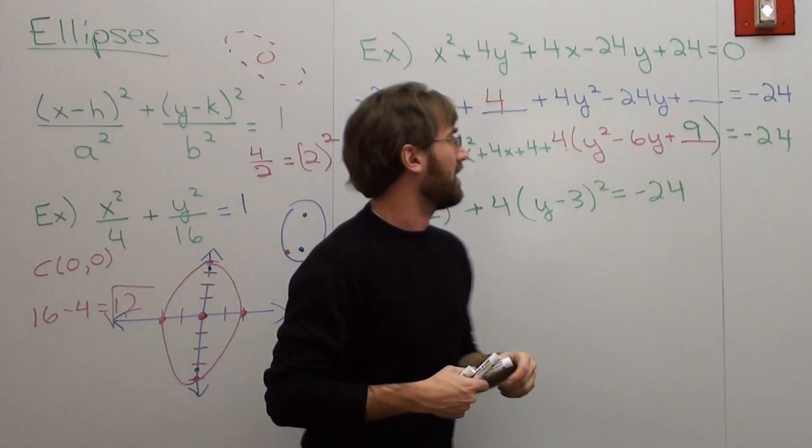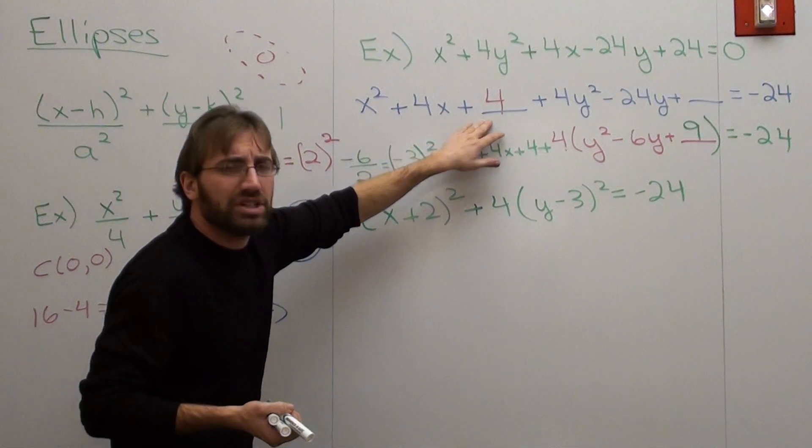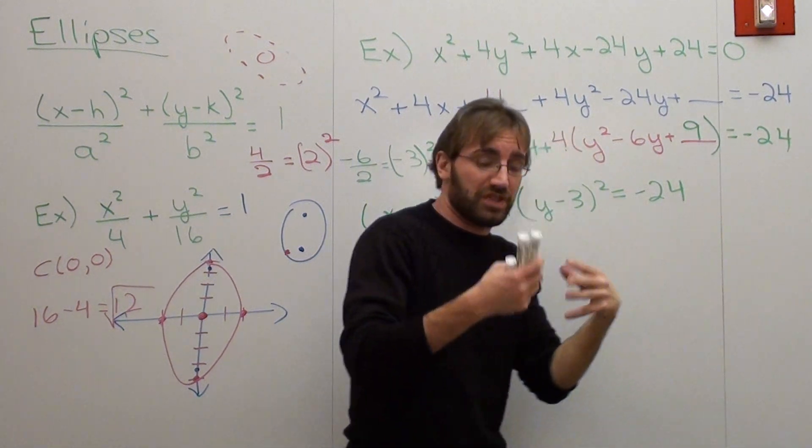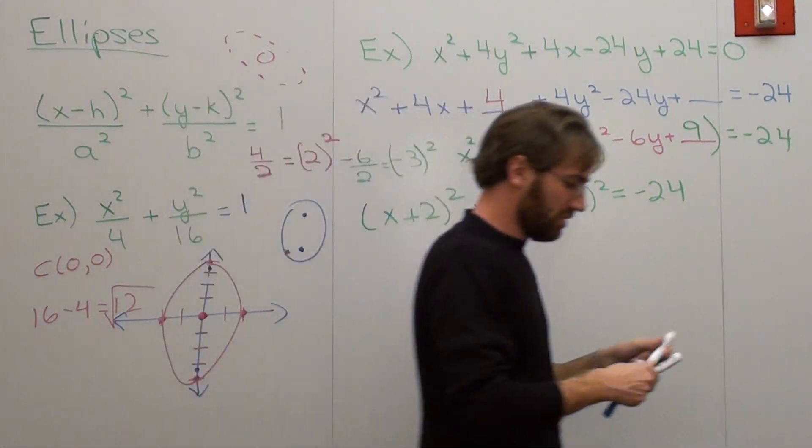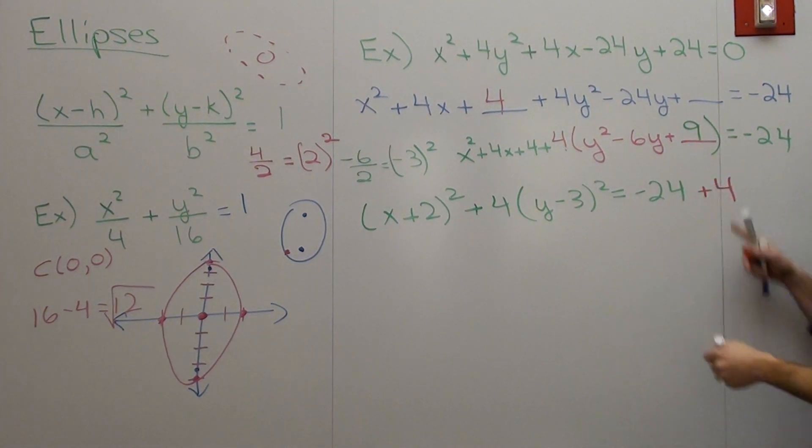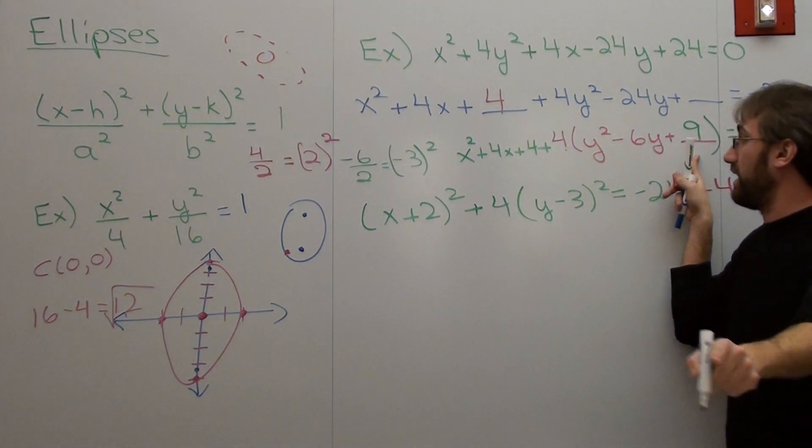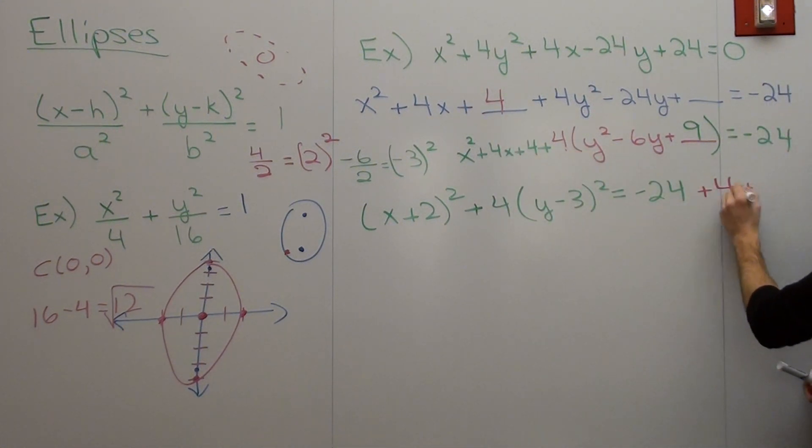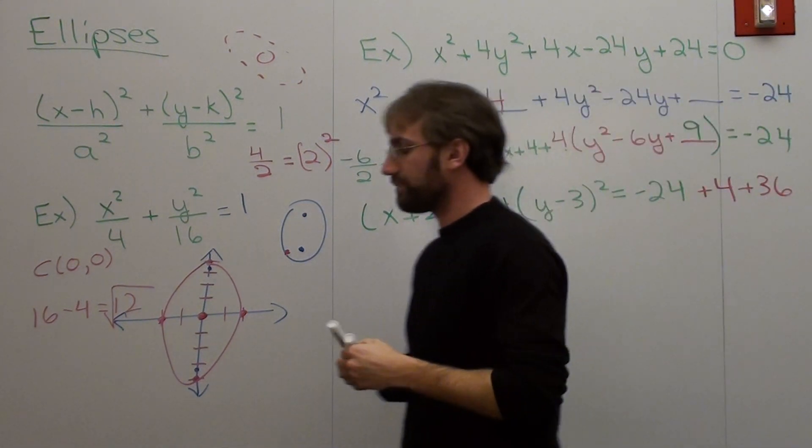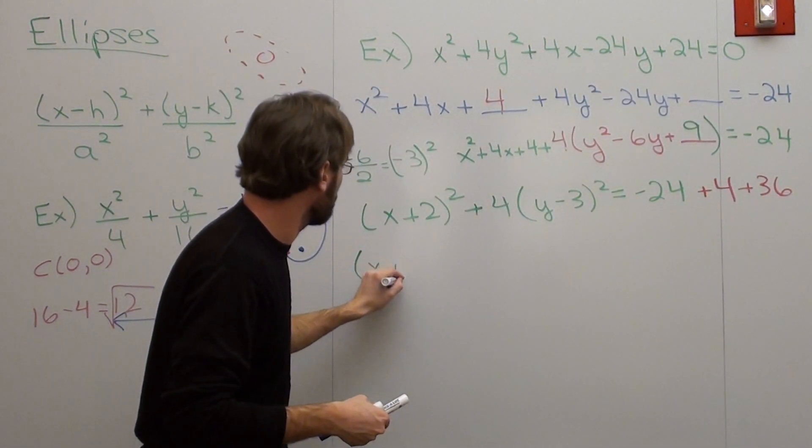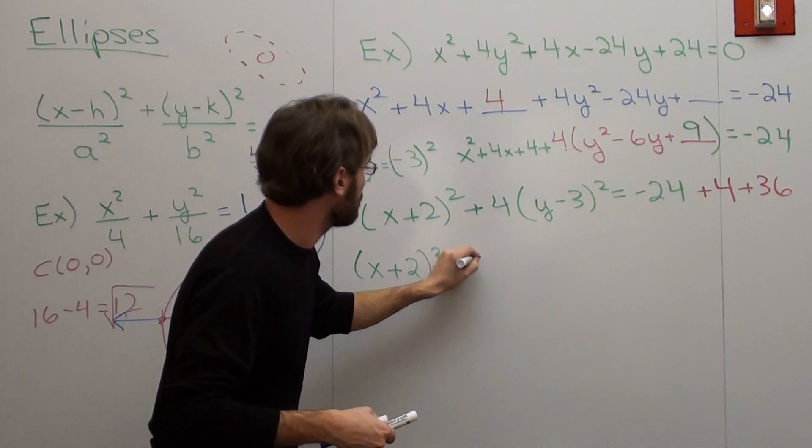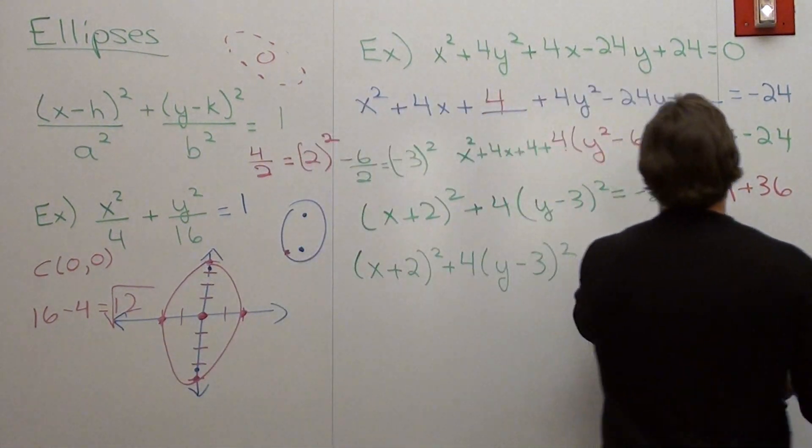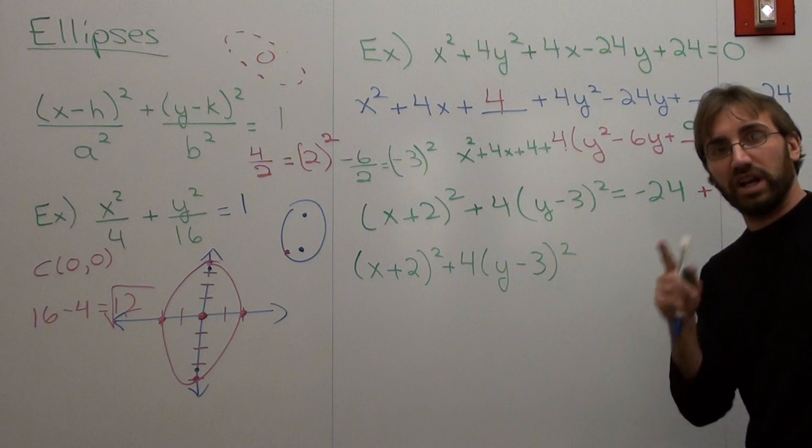But the problem is that I added a mysterious number here and I added a mysterious number here. So I better add those same numbers here so it offsets the equation. So I added a 4, and I added a 9. But I actually didn't add a 9. I did add a 4. What I did was I added a 4 times a 9, so I actually added a 36. 4 plus 36 is 40. 40 minus 24 is 16.